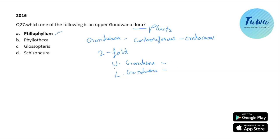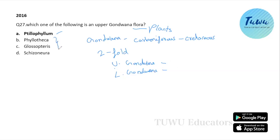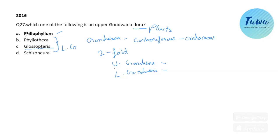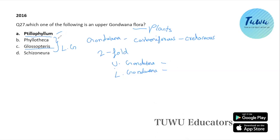Tillophilum is the upper Gondwana index fossil. In contrast, for the lower Gondwana group, Glossopteris is the index fossil — that is the direct answer. So the index fossil for upper Gondwana is the correct answer here.